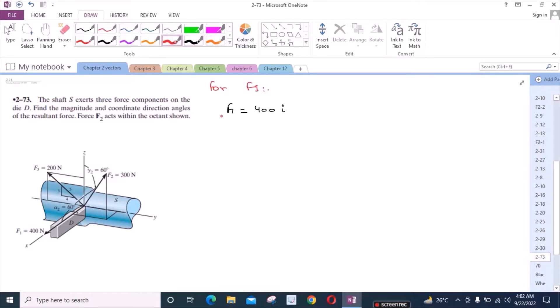For the force F2, we have been given the coordinate direction angles. We have alpha2 which is equal to 60 degrees, and gamma2 which is equal to 60 degrees, but beta2 is missing. For that, we have to use this relation.